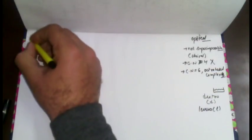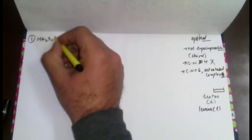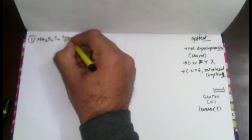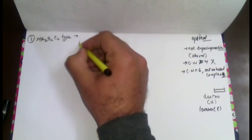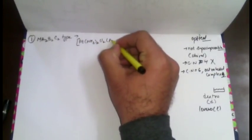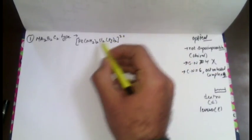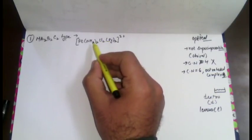Just as geometrical isomers have their own types, optical isomers also have their own types. There are four types to learn. The first type of optical isomers involves an octahedral complex with metal M and overall coordination number six. We call this the MA₂B₂C₂ type. This type of compound can exist as optical isomers.